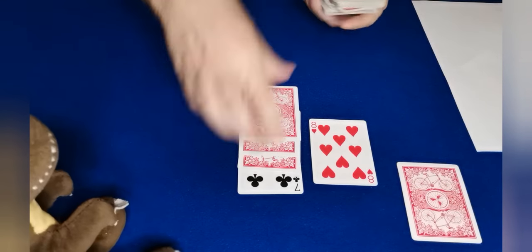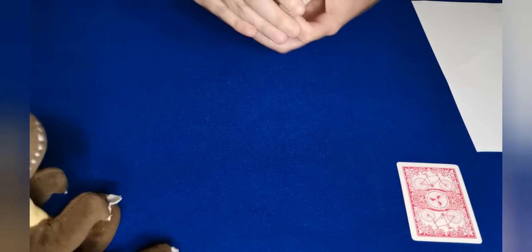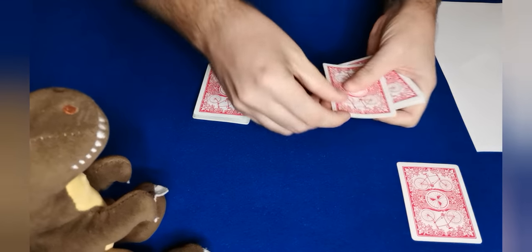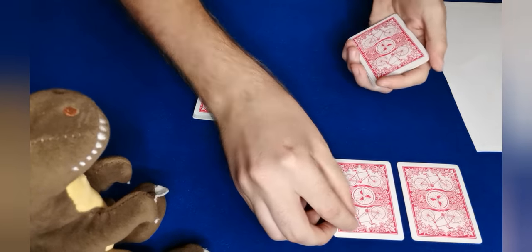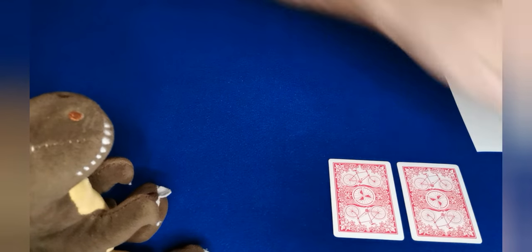So that's card number one. I'm just going to place the rest of the cards here. Now we're going to select a second card. Theodore just tell me stop. Stop. Okay, so that's your card. I'm just going to place that's your second card. I'm going to place that there so now we're done with the deck of cards for now.